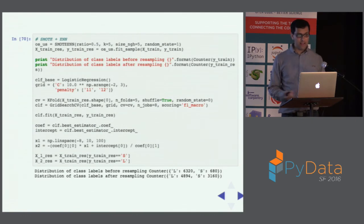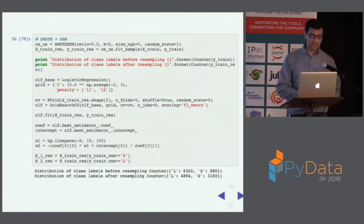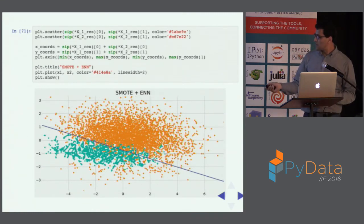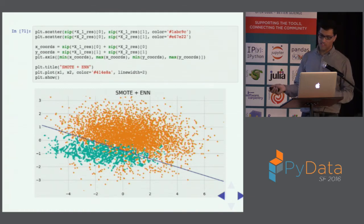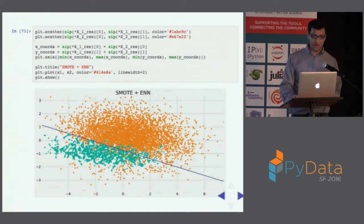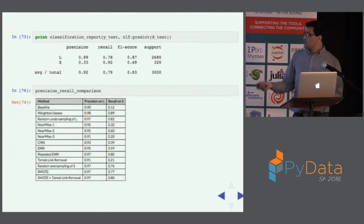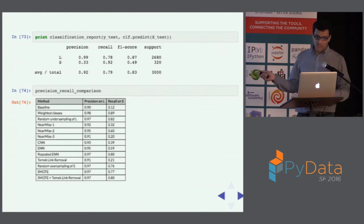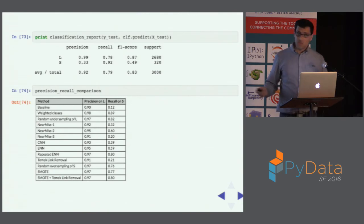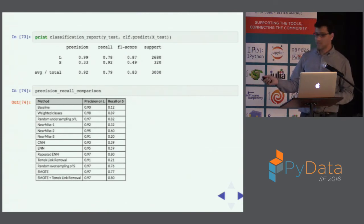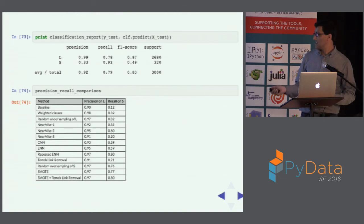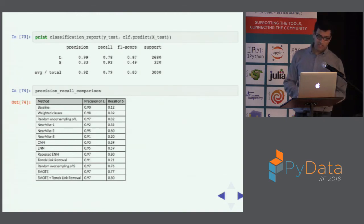SMOTE followed by Edited Nearest Neighbors, achieving ratio 0.5 with neighborhood size 5, does much better. SMOTE produces a fluid description of the minority class via synthetic examples, and ENN then removes majority class points lying on top of those. This provides a nicer delineation between the two classes. On this dataset, it's the best performance achieved: 99% precision on the majority class and 92% recall on the minority class.